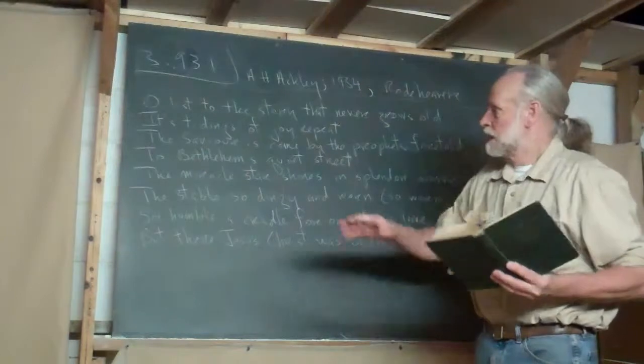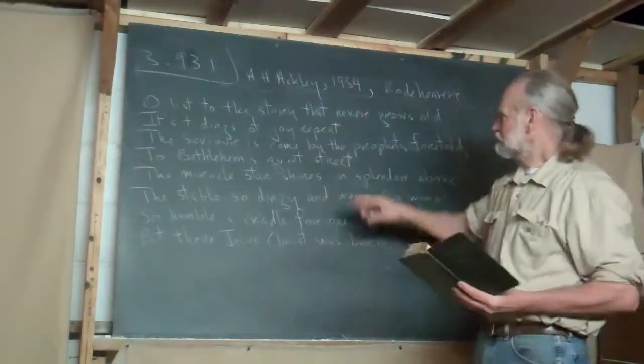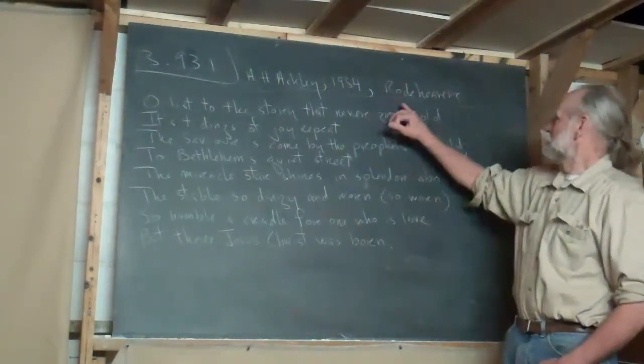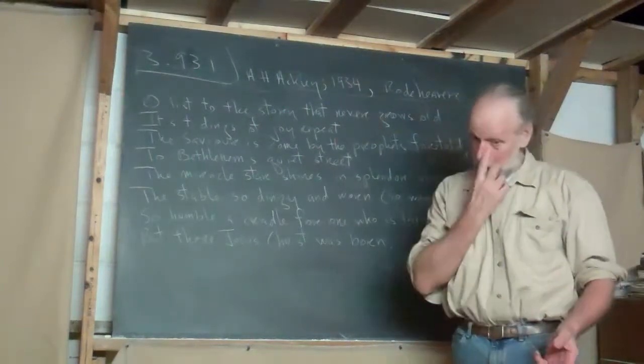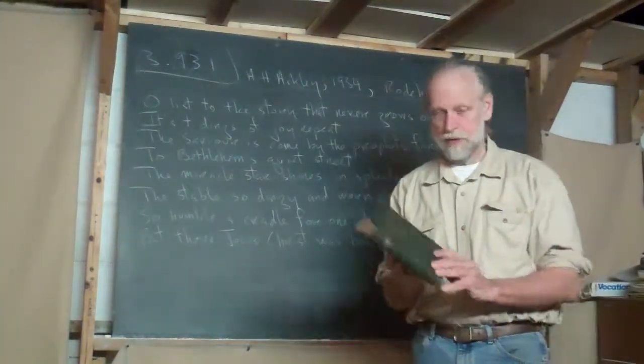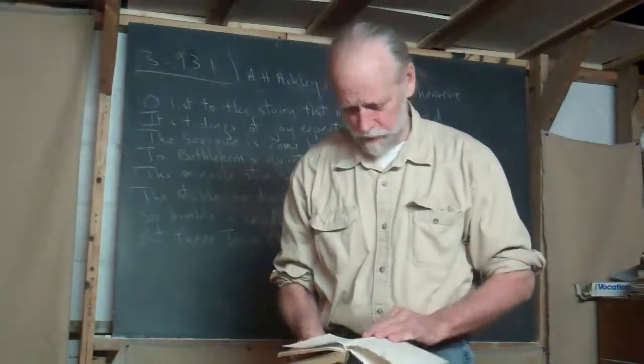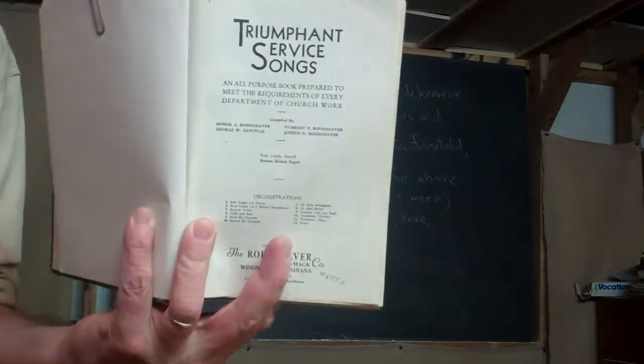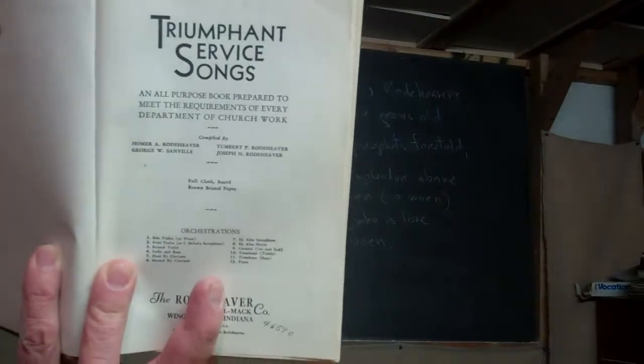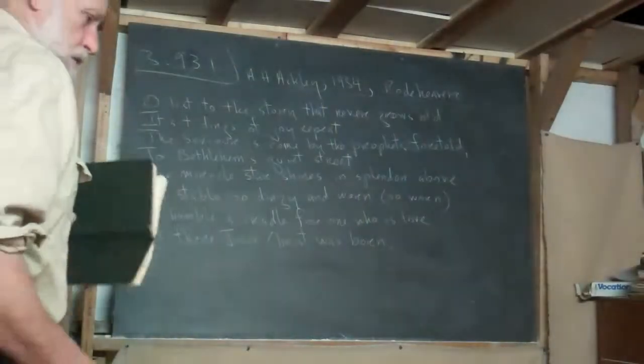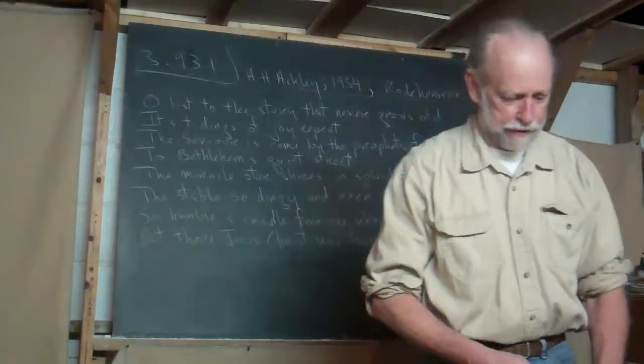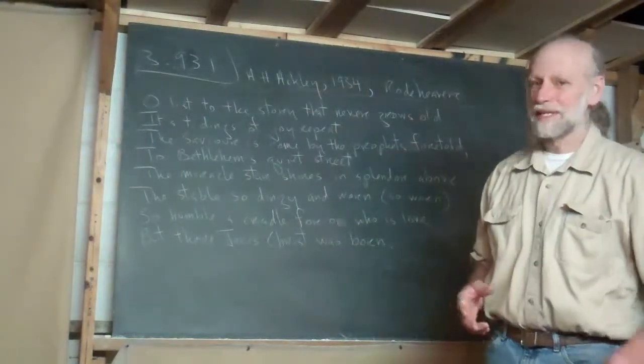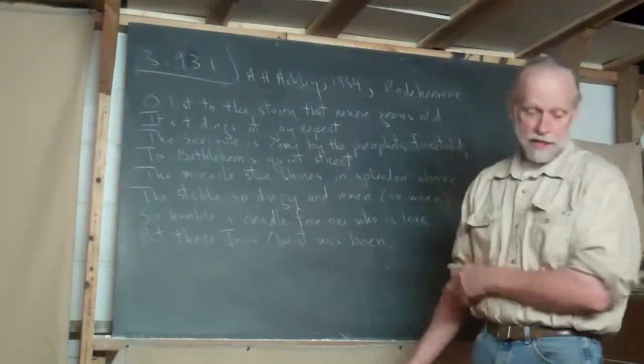Now, it was written by A.H. Ackley. Copyright 1934. He's an American. And he wrote it for Roud Heaver, I guess, is the publishing company. And this hymnal, Triumphant Service Songs, it says, this hymnal was so influential, I think, in America. All kinds of little country churches used it in their Sunday schools, independent churches. And there's a whole vast body of hymns that are known in America and loved, but they didn't work their way into the mainline hymnals. And this is one of them.